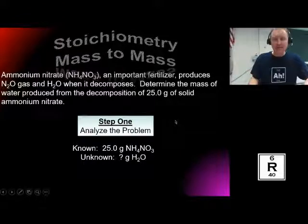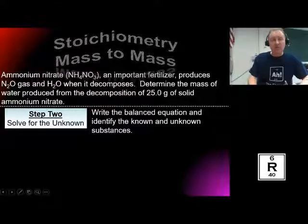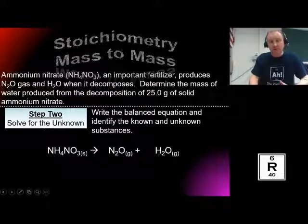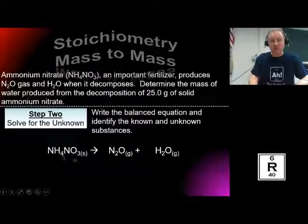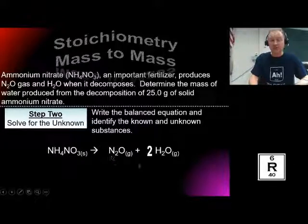To balance the equation, we have ammonium nitrate decomposing into dinitrogen monoxide and water. I write it like this: ammonium nitrate decomposes into dinitrogen monoxide and water. Is it balanced? I've got two nitrogens on the left and two on the right, which is good. But I only have two oxygens and I need three, and I have four hydrogens but only two on the right. By simply adding a coefficient of two in front of water, I think I've balanced it. Now I've got four hydrogens and four hydrogens, three oxygens and three oxygens, and two nitrogens and two nitrogens. It's balanced.